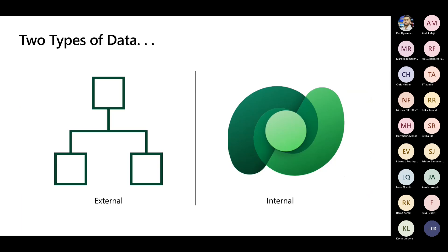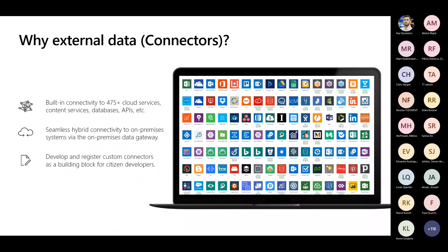Considering Dataverse in the system, we have two types of data: external Dataverse data and internal data. External data is outside of the Power Platform, and internal data lives within the Power Platform. To get external data into Dataverse, we use connectors. We have nearly 470-plus connectors already available in Power Automate which we can use to automate bringing data from the external world into the Dataverse system.